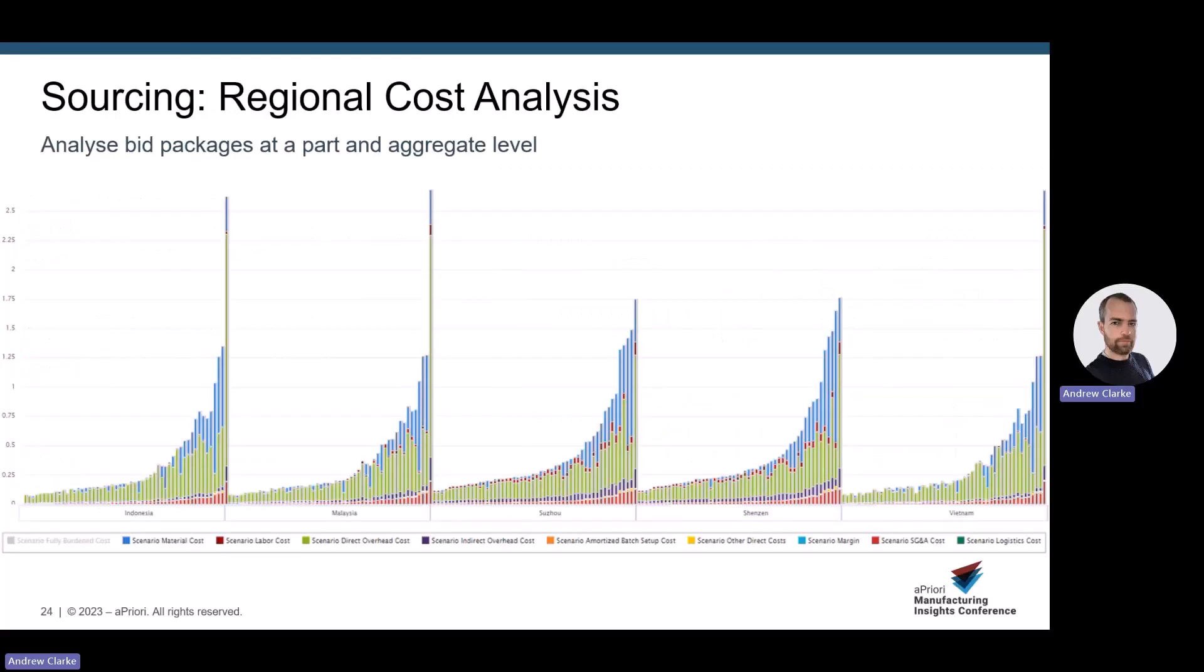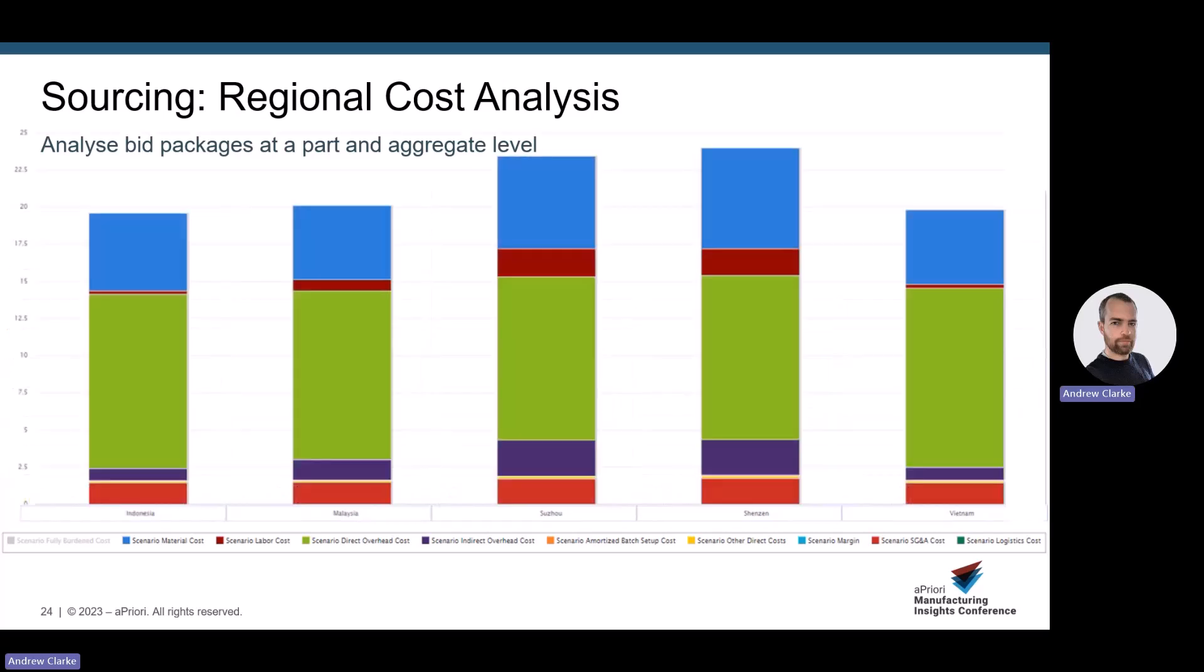For sourcing, we can use bulk costing to perform a regional analysis to help inform decisions on the next NPI project or indeed potentially move existing production. We can interrogate this data at piece part level or aggregate level so we can see what our specific part impact is or what an overall view is of the different regions.